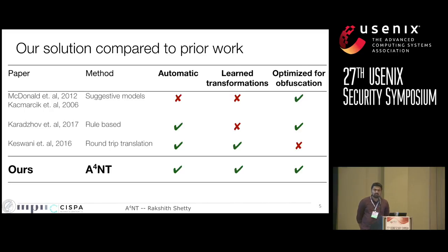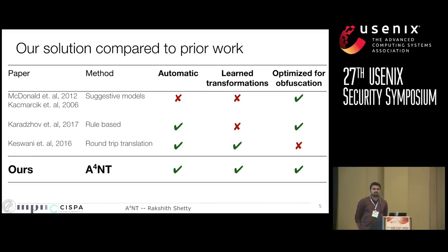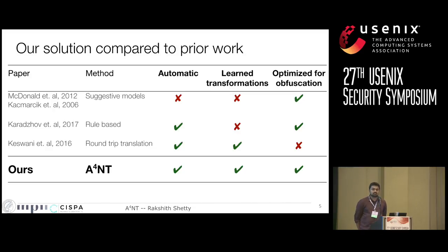So how does this compare to prior work in obfuscation? There are three main categories. First, suggestive models analyze your text and give you suggestions to make changes like using different phrasing or reducing counts of some particular letter — but this requires the author to go back and rewrite the text, which can be tedious. A second class uses rule-based transformations, which apply fixed transformations to your text. However, these are designed for a particular dataset and don't generalize well to different settings.